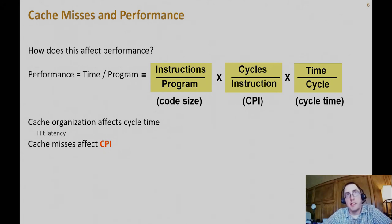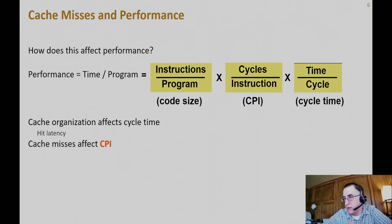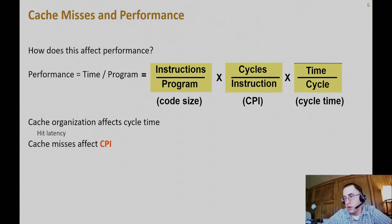The hit time is especially important for the clock cycle time. Think about your five-stage pipeline and replace instruction memory and data memory with instruction cache and data cache. Hit time to memory is a critical path through that pipeline stage. You want to reduce the hit latency for the L1 cache because it affects the clock cycle time.